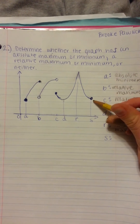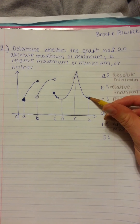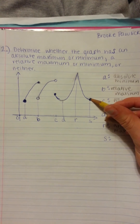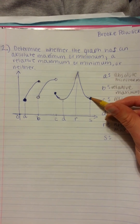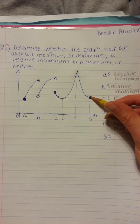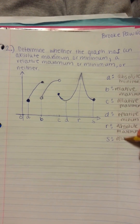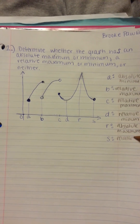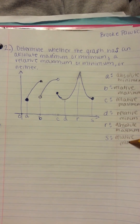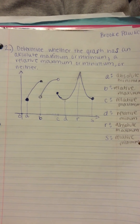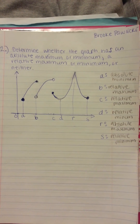For point S, by looking at it, we can tell it's a minimum. And since it's not the lowest point on the graph, it's a relative minimum. And that completes the problem.